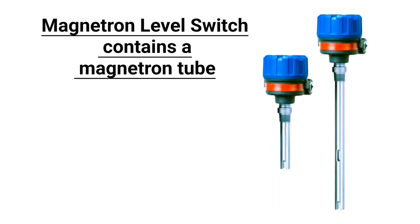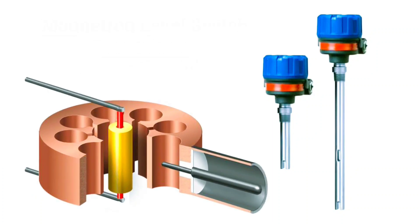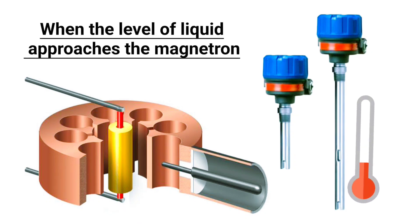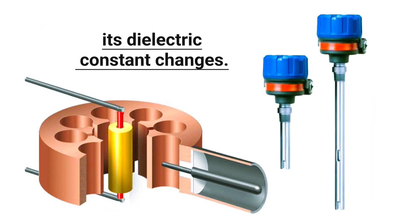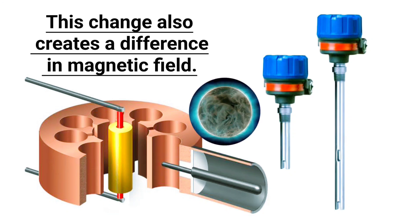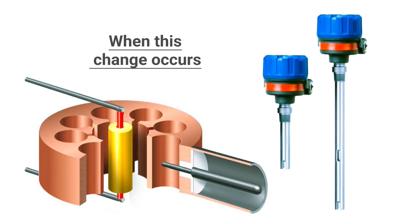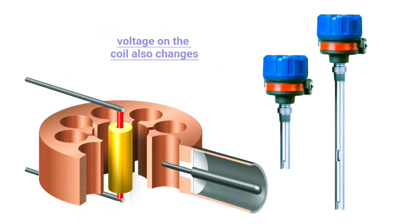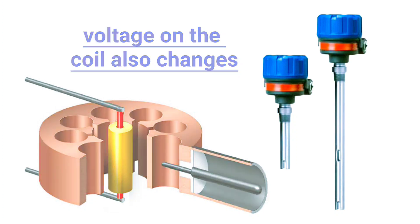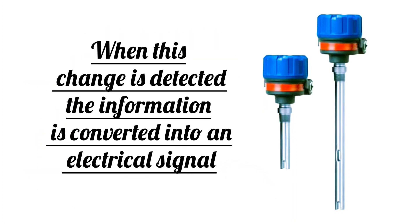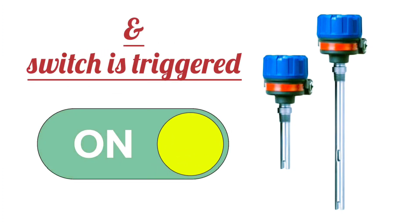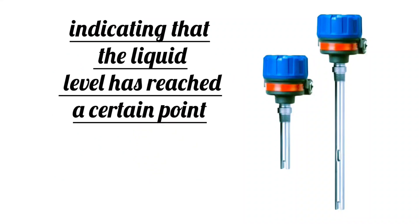Friends, magnetron level switch contains a magnetron tube, which has a coil and a permanent magnet. When the level of the liquid approaches the magnetron, its dielectric constant changes, and this change also creates a difference in the magnetic field. When this change occurs, the voltage of the coil also changes, which the switch detects. When this change is detected, the information is converted into an electrical signal and the switch is triggered, indicating that the liquid level has reached a certain point.